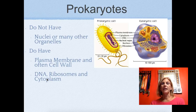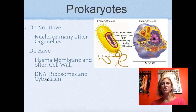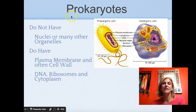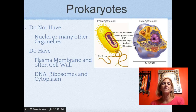Looking at prokaryotes, what are some general characteristics? They don't have a nucleus — 'pro' means first or before, and 'karyote' refers to kernel, meaning the nucleus. So prokaryote refers to 'before the nucleus.' They don't have nuclei or other membrane-bound organelles, but they do have ribosomes because they need to make proteins.